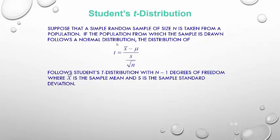We've seen this formula before — it looks a lot like the z-scores we were calculating in the chapter on the distribution of the sample mean. But because we use s instead of sigma, it gets the t designation. This follows a t-distribution with n minus 1 degrees of freedom. So x-bar is the sample mean and s is the sample standard deviation — it looks a lot like a z-score, just with s instead of sigma.